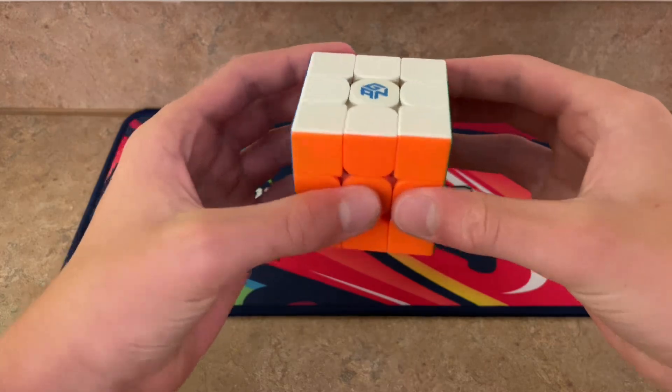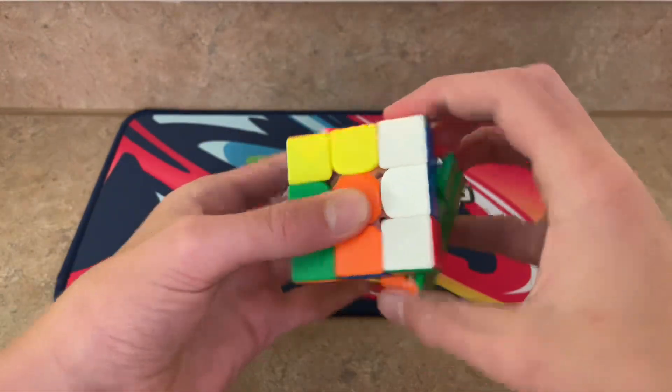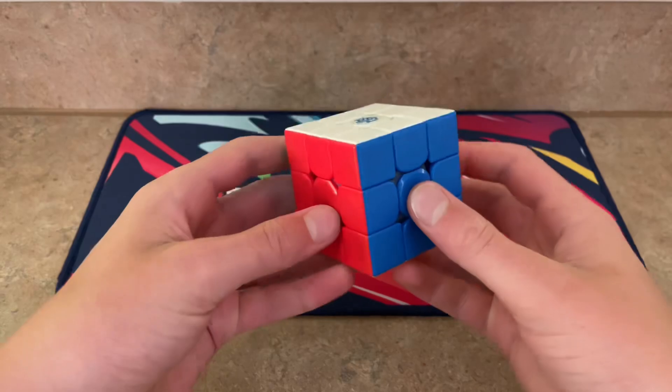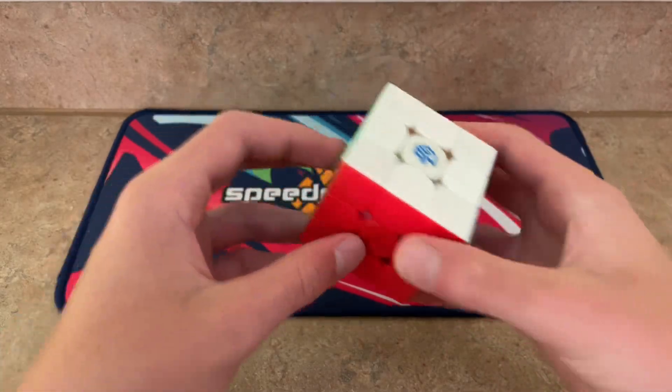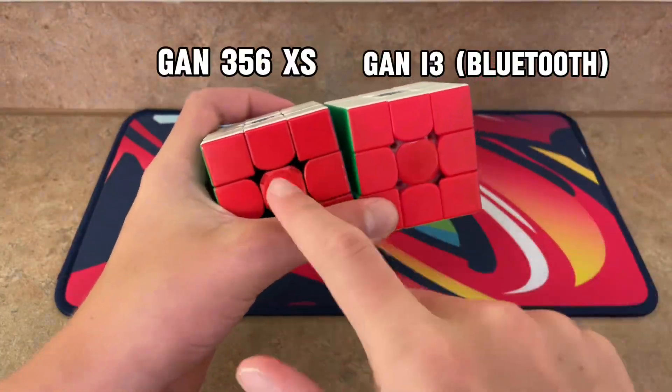Next up, we have the Gan i3. It's a smart cube and actually turns pretty well, despite my terrible turning. You can connect it to your phone and use a lot of different features. And if you remember, I swapped the logo between these two cubes.